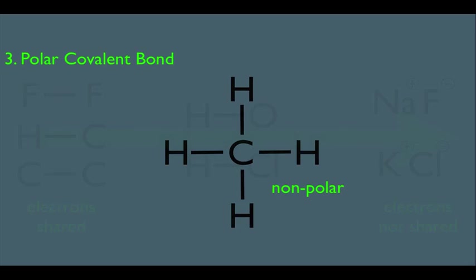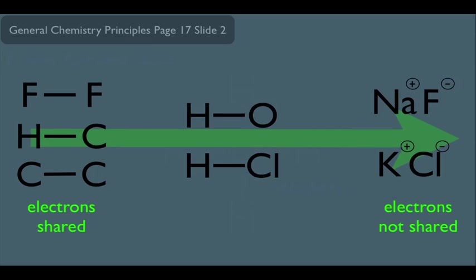Let's look at the big picture of bonding. The bonds on the left-hand side are covalent bonds where electrons are equally shared. The H-O and H-Cl bonds are also covalent and also a sharing of electrons, but they're not evenly shared — one atom has more electrons around it than another. Then the ultimate extreme to the right is the NaF and KCl type bonds, or ionic bonds, where electrons are not shared at all.